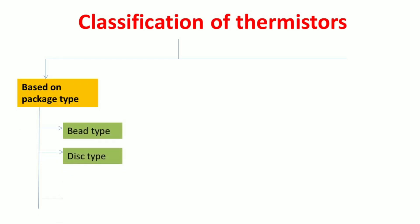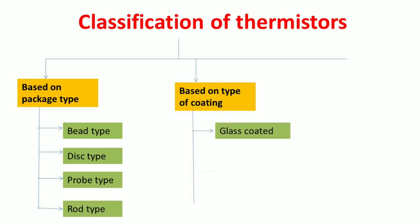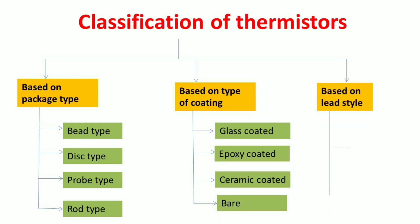Coming to the next, that is classification of thermistors. Thermistors are classified based on the type of package: they are classified as bead type, disk type, probe type, and rod type. Secondly, based on type of coating, they are classified as glass coated, epoxy coated, ceramic coated, and bare type. Based on lead style, they are classified as axial, radial, and leadless.